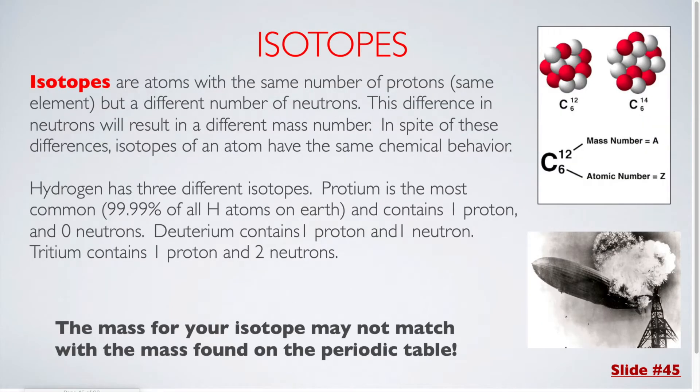Isotopes are atoms with the same number of protons, which means they are the same element, but a different number of neutrons. This difference in neutrons will result in a different mass number. In spite of these differences, isotopes of an atom have the same chemical behavior.